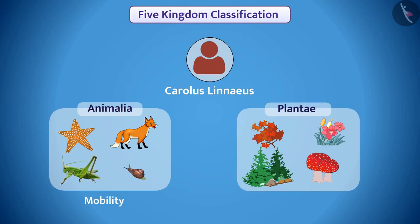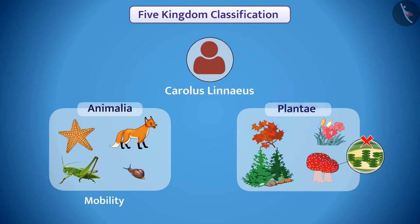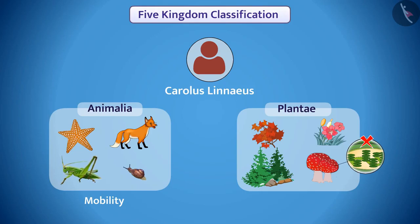But there was some problem with this classification. Fungi, which does not contain chlorophyll, is not a plant yet is kept in the kingdom Plantae. To overcome these problems, various attempts were made to classify the organisms. Out of them, the five kingdom classification is the most popular.